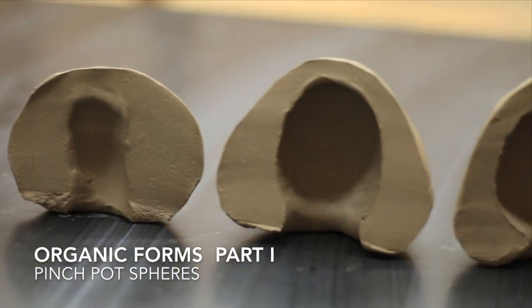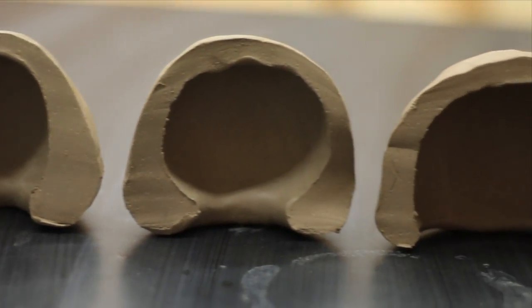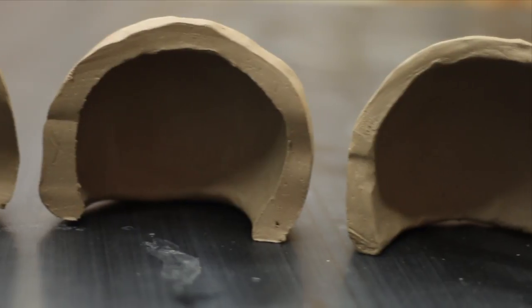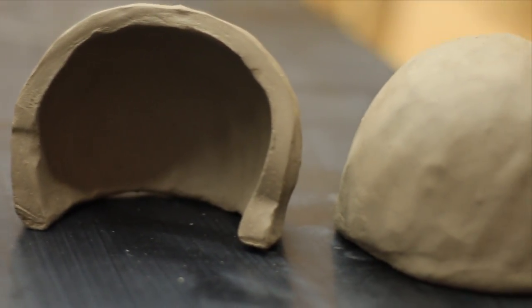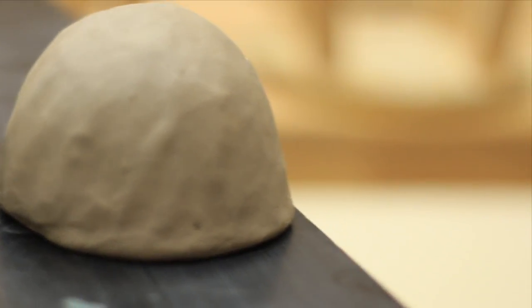Using the double pinch pot technique is an excellent way to make a spherical form for sculpture or for pottery. Today we're going to use it to make an organic form. Enjoy!